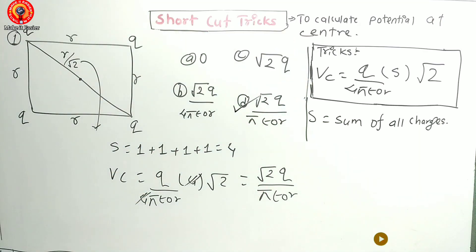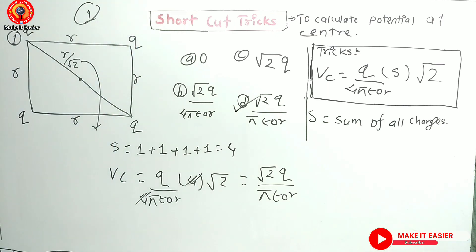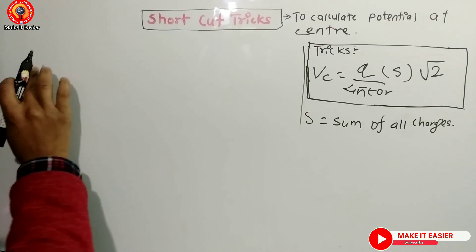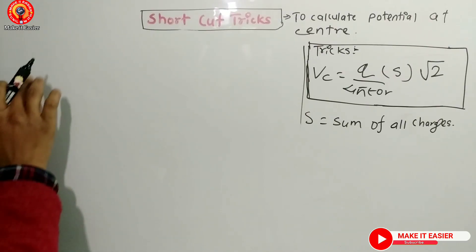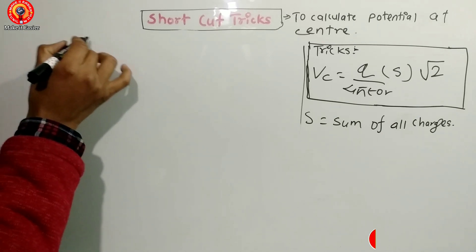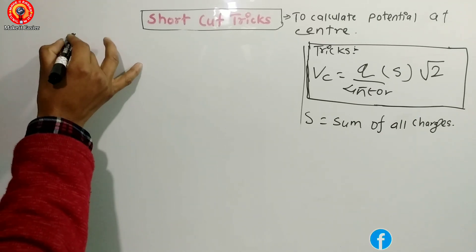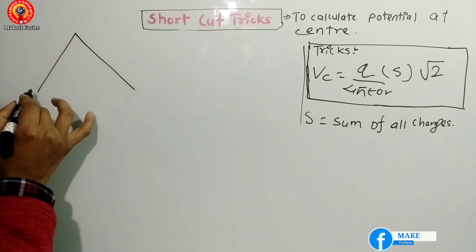Now moving on — triangle. A quick trick for the triangle: suppose we have an equilateral triangle. This is the triangle case.